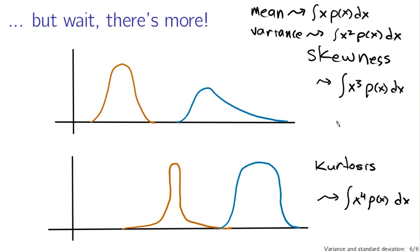You could keep going — taking the integral of x to the fifth rho of x dx and beyond — and you would keep getting properties of the probability distribution relevant to its shape. You won't hear very much about skewness and kurtosis in physics, but it's good to know the field continues. For the purposes of quantum mechanics, what you need to know is that variance is related to the uncertainty, and we will be doing lots of calculations of variance based on probability distributions derived from wave functions.